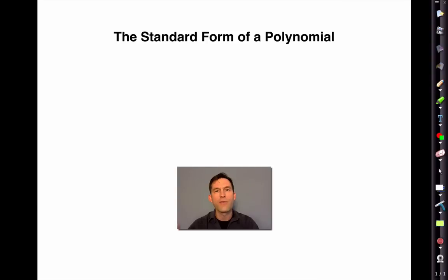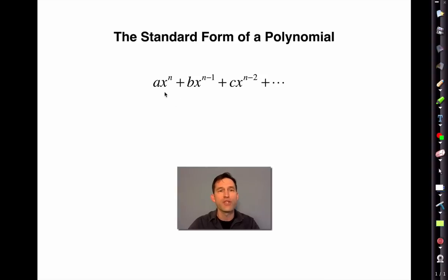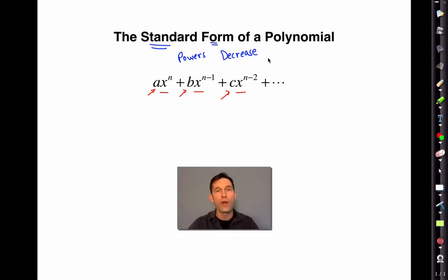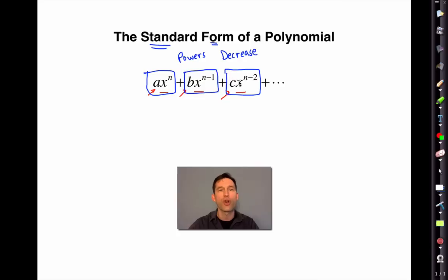The next thing we'll discuss is the standard form of a polynomial. It's important to be able to look at polynomials and identify the coefficient on the highest term — that's called the leading coefficient — and identify coefficients as terms decrease in power from, say, x to the fifth, x to the fourth, x to the third, et cetera. Standard form means rearranging the polynomial so the highest power comes first along with its coefficient, then the next highest power along with its coefficient, and so on. Some powers could be missing — that's okay — but the powers must decrease. A term is something separated by addition or subtraction.